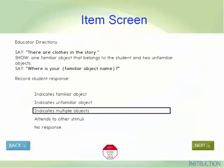Here's an example of an item screen that could be embedded in the second reading of an ELA text. The educator directions provide instructions on how to interact with the student. The lines presented in bold after SAY are said directly to the student. The actions described after SHOW are performed by the test administrator for the student. As the test administrator completes the steps, he or she observes how the student responds and records responses by selecting the best match. In this case, the answer option 'indicates multiple objects' has been selected. Once selected, the test administrator uses the buttons to move to the next screen.